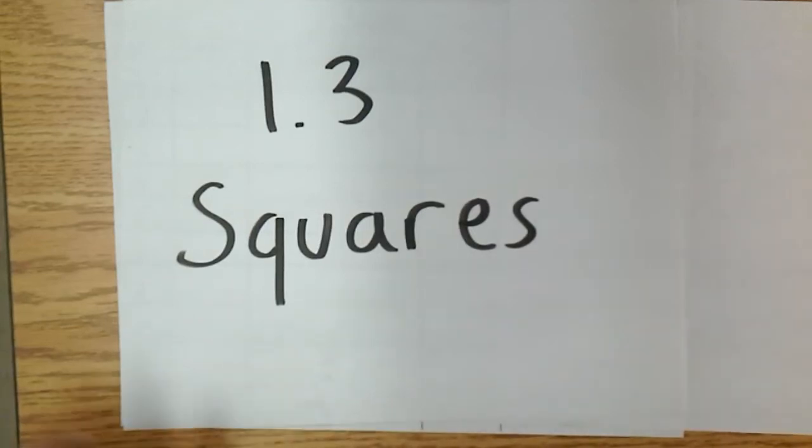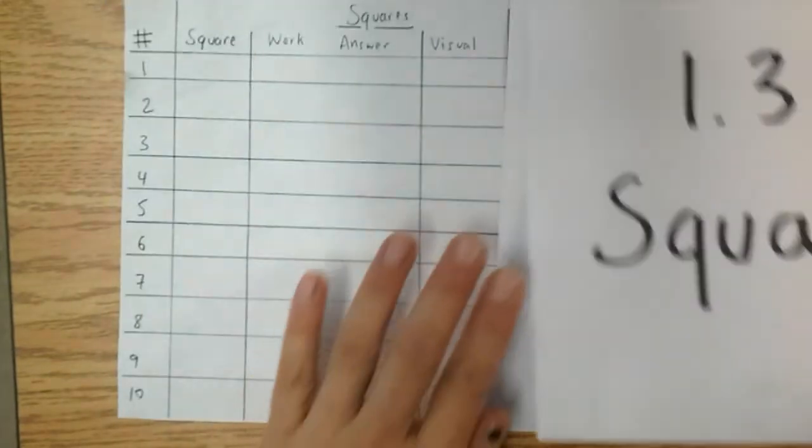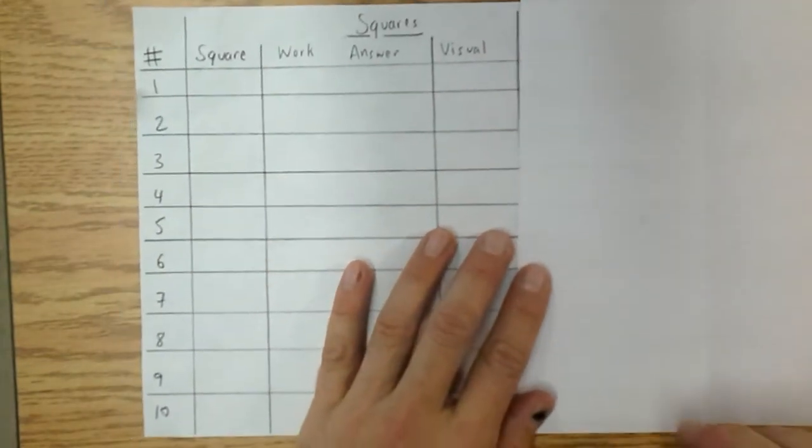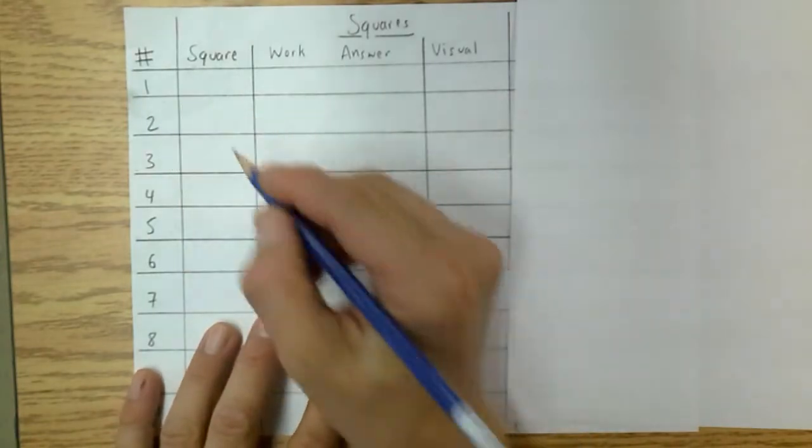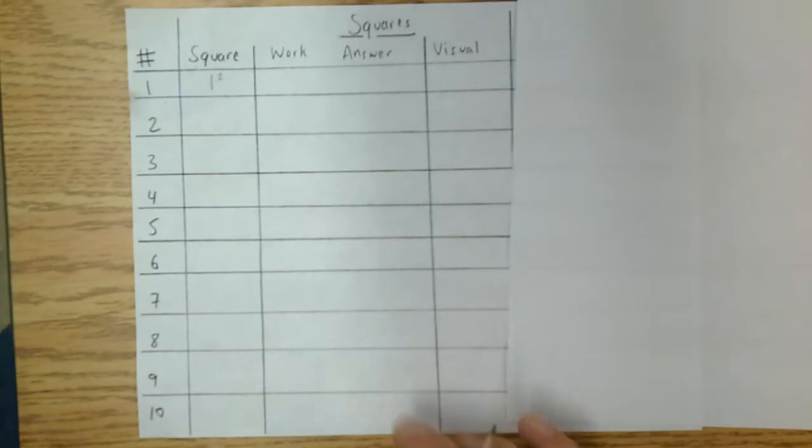This is for section 1.3, and this is about squares. Now when you square something, it can be like a verb. It's taking any number, so in this case 1, and we write it like this. It's a little 2 up in the right-hand corner.